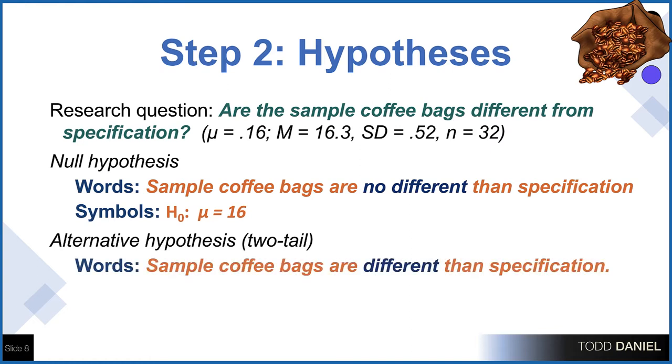For the alternative hypothesis, in words, we would describe sample coffee bags are different than specification, and in symbols, h sub one, colon, mu does not equal 16.